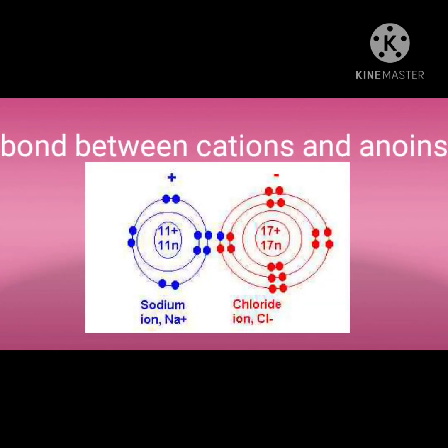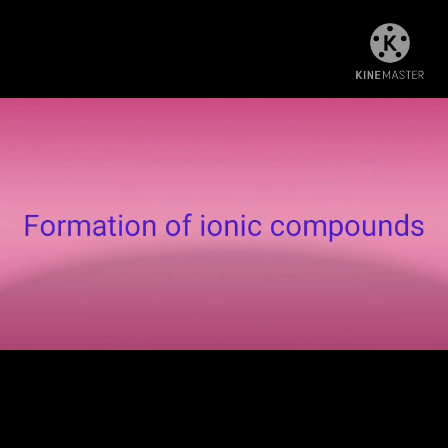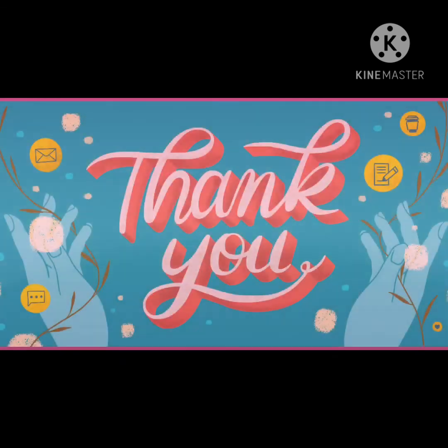Now children, you understand what an ionic bond is — the bond between cations and anions, that is, between metal ions and non-metal ions, is called an ionic bond. In the next video we will discuss how ionic compounds are formed. Thank you, children.